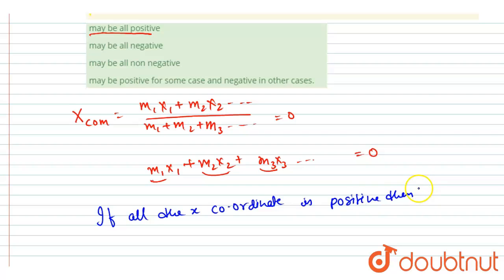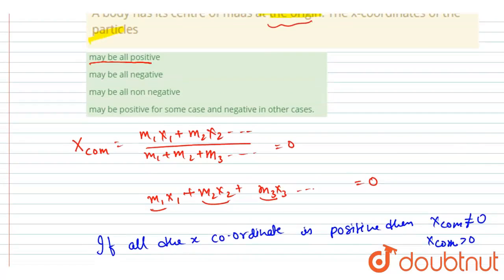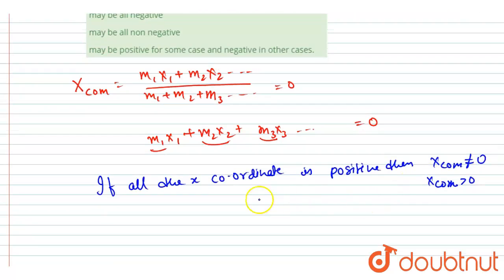If all the x-coordinates are positive, then x_com can't be zero, will be not zero, rather it will be positive, positive, positive, right? And if you see, maybe all negative. If I say all negative, then the center of mass will be having a negative coordinate.